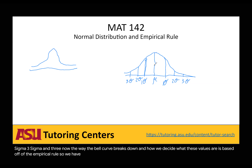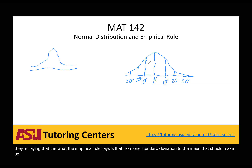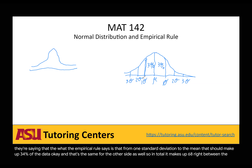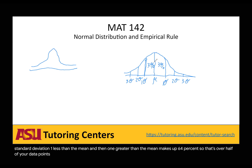The empirical rule adds percentages to each of these sections. From one standard deviation to the mean, that should make up 34% of the data — and that's the same for the other side as well. So in total, between one standard deviation below the mean and one standard deviation above the mean, it makes up 68% — that's over half of your data points, that close to the mean. Then from there we have 13.5%, and then lastly we have 2.3%.